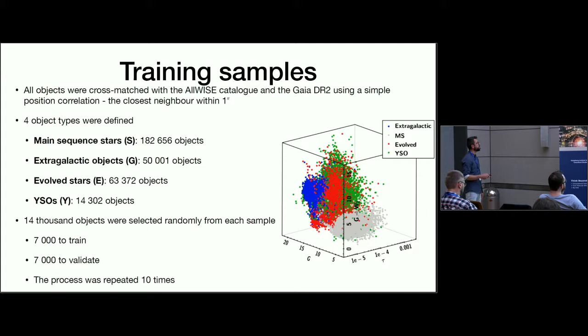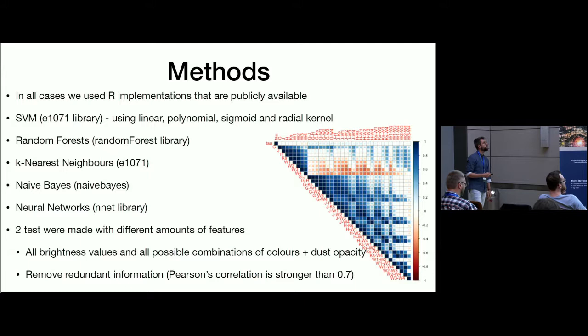This process was repeated 10 times. For each time we made a classification, it was a probability-based classification. For each object we had a probability, what is the chance that it is a YSO. By doing this 10 times we could assign some errors.